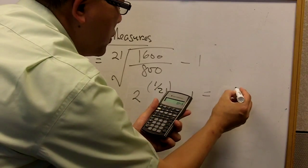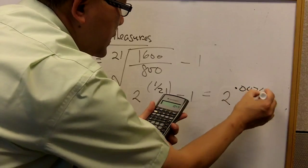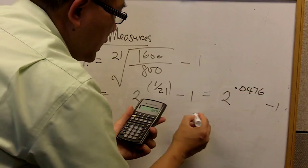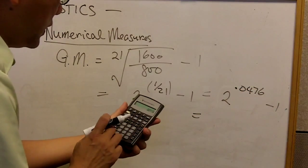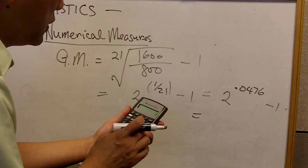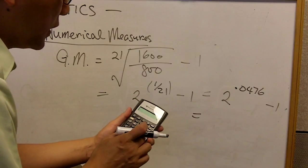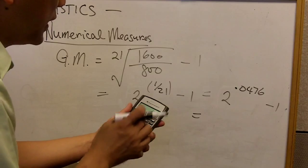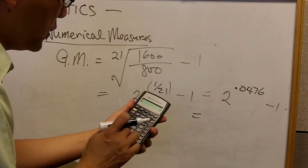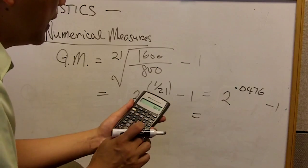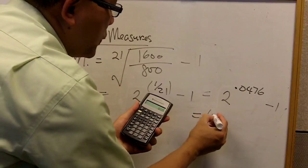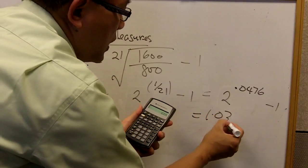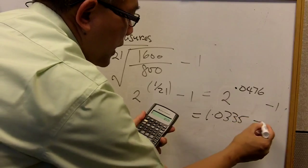And it is equal to 2 to the power of 0.0476 minus 1. If you go back to the calculator, and again with the 2 raised to power, so I have the y to the x button, and the x is going to be 0.0476. And I got 1.0335 minus 1.